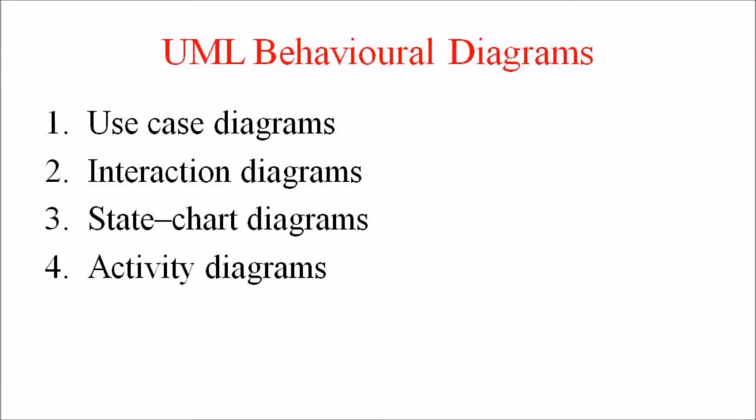The UML Behavioral Diagrams visualize, specify, construct and document the dynamic aspects of a system. The Behavioral Diagrams are categorized as Use Case Diagram, Interaction Diagram, State Chart Diagram or State Diagram and Activity Diagrams.